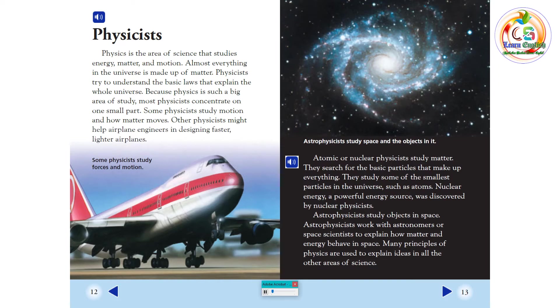Atomic or nuclear physicists study matter. They search for the basic particles that make up everything. They study some of the smallest particles in the universe, such as atoms. Nuclear energy, a powerful energy source, was discovered by nuclear physicists. Astrophysicists study objects in space. Astrophysicists work with astronomers or space scientists to explain how matter and energy behave in space. Many principles of physics are used to explain ideas in all the other areas of science.